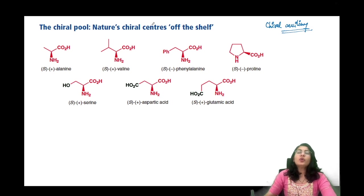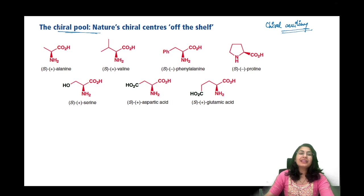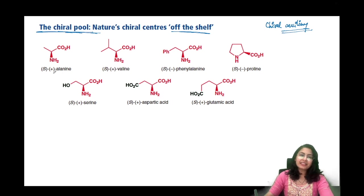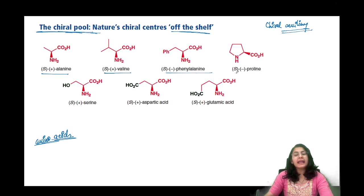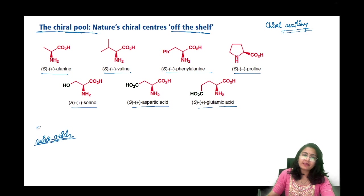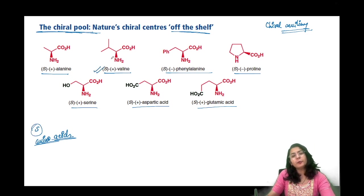To understand the chiral auxiliary — a chiral unit which can be connected to the molecule, perform the enantioselective reaction, and then be removed — it would be very expensive to create it from scratch. Instead, we use the chiral pool: nature is full of chiral molecules. For example, the amino acids — S(+)-alanine, S-valine, S(-)-phenylalanine, S(-)-proline, S(+)-serine, S(+)-aspartic acid, S(+)-glutamic acid — all of these amino acids are S configuration.